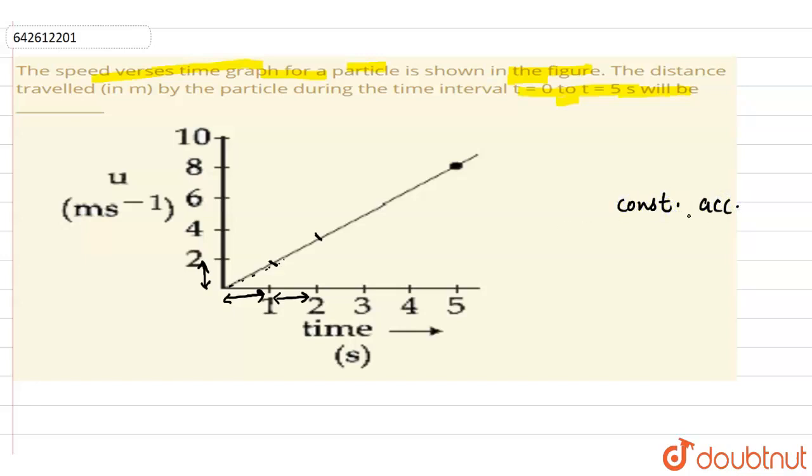The acceleration can be calculated by the slope of velocity time graph. So here let's just calculate the slope. So this angle is theta. So the slope here is tan theta which is the value of acceleration.